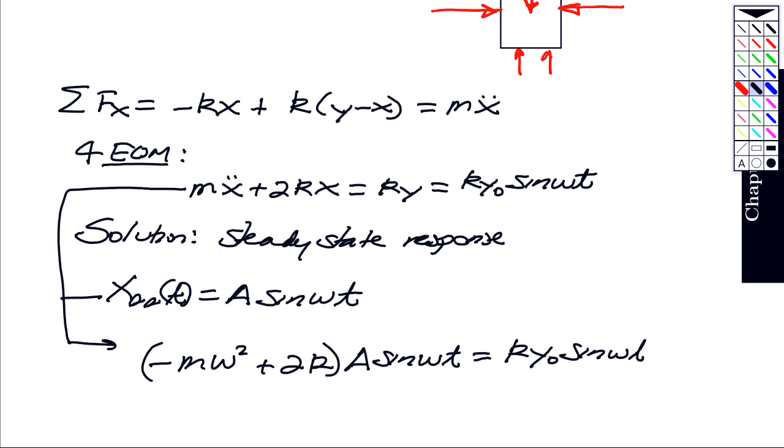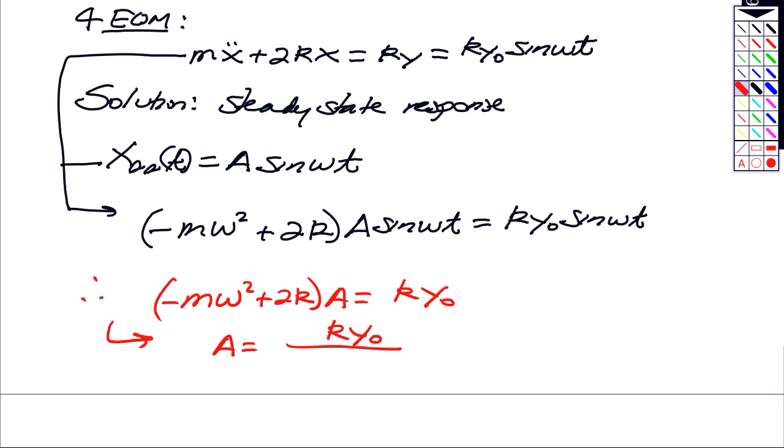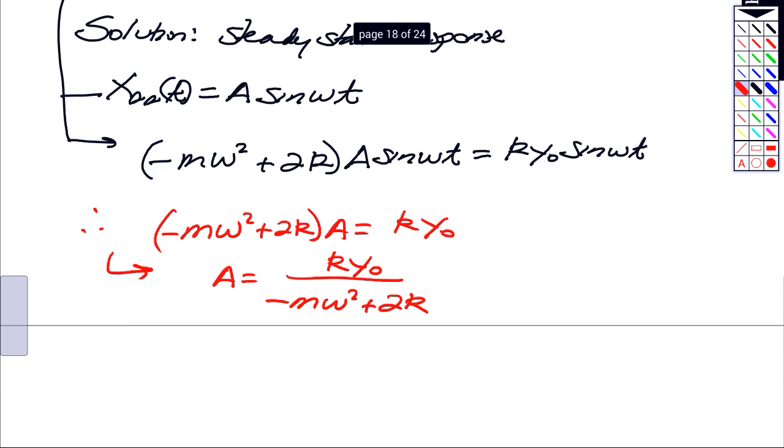The coefficients in front of sine must balance out left side and right side. So what I have is minus M omega squared plus 2k times A must be balanced out by k times y naught. Therefore, the amplitude of that response is k y naught divided by minus M omega squared plus 2k. That is the amplitude of our response.